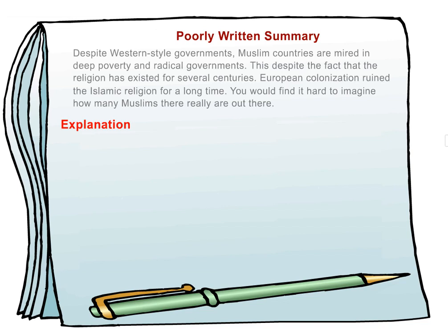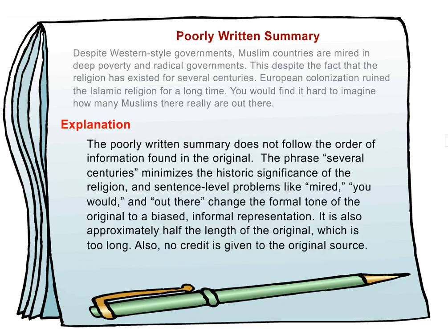Explanation: The poorly written summary does not follow the order of the information found in the original. The phrase 'several centuries' minimizes the historic significance of the religion, and sentence-level problems like 'mired,' 'you would,' and 'out there' change the formal tone of the original to a biased, informal representation. It is also approximately half the length of the original, which is too long. Also, no credit is given to the original source.